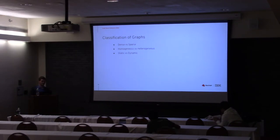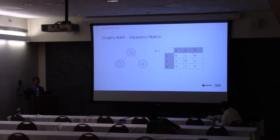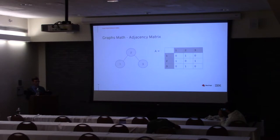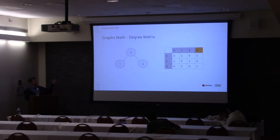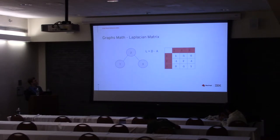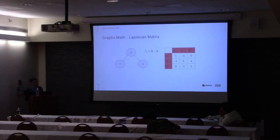How do we deal with graphs computationally? There are some types of matrices. We consider nodes and construct an adjacency matrix that maps how nodes are connected to each other. The degree matrix is a diagonal matrix that tells you how many edges each node has. There is another well-known matrix used for graphs — the Laplacian — which is basically the difference between the degree matrix and the adjacency matrix.